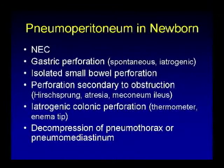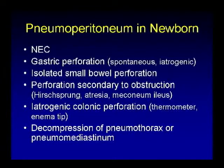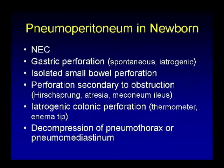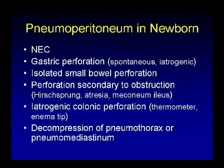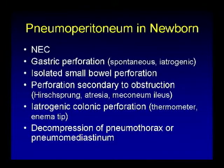Other differential diagnoses for pneumoperitoneum in a newborn, apart from necrotizing enterocolitis, include spontaneous or iatrogenic gastric perforation, isolated small bowel perforation from an intrauterine ischemic event, perforation secondary to obstruction — most commonly in Hirschsprung's disease — distal ileal or jejunal atresia, obstruction related to meconium ileus, and iatrogenic rectal or sigmoid perforation from thermometer or enema tip placement.